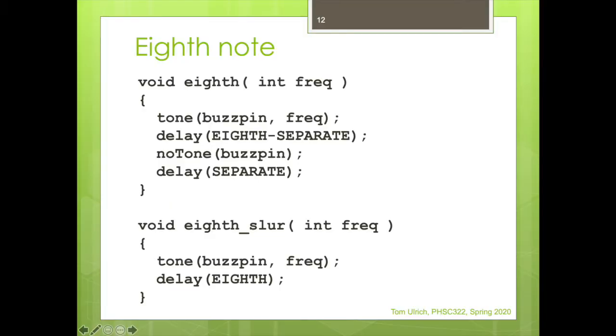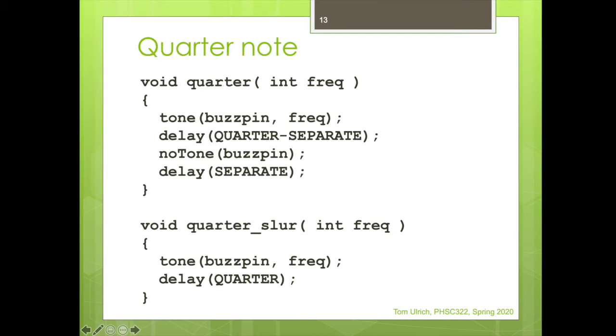So I did it this way. I wrote a function called eighth, which is an eighth note. You pass the frequency. And look what we do. We call tone and we say buzz pin. That's the pin. And I say the frequency. And then I delay and I take the length of an eighth note and I subtract off the separate value. And then I say no tone and then I delay separate value. So that'll maintain the tempo, but it'll give you a little gap at the end. And then for eighth underscore slur, that's if they're slurred. Well, then it's the same, but you don't have the no tone. So you, what you do is you go, the delay is the full eighth note delay.